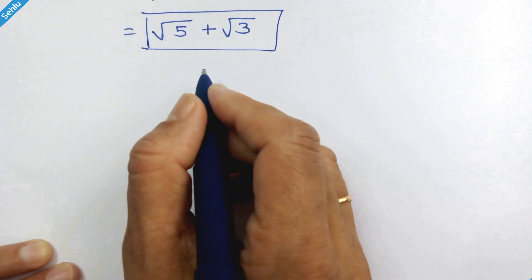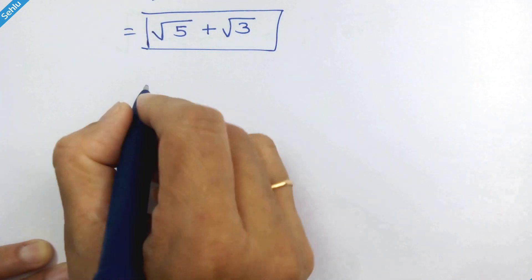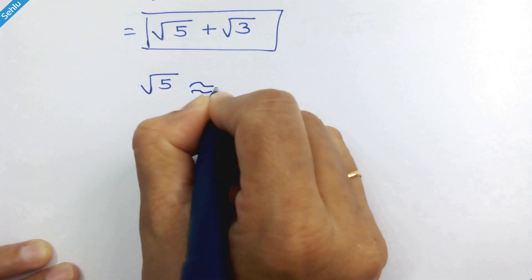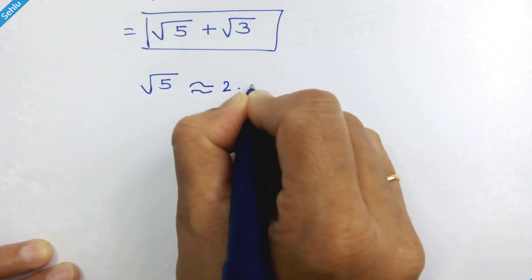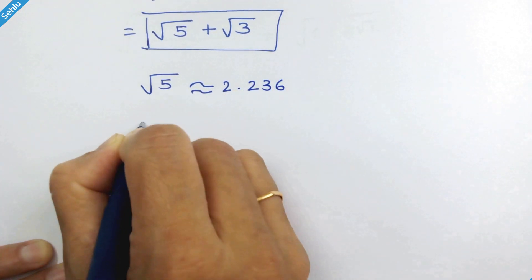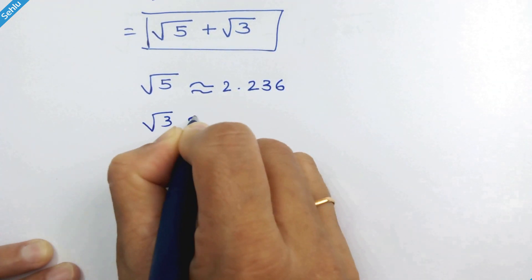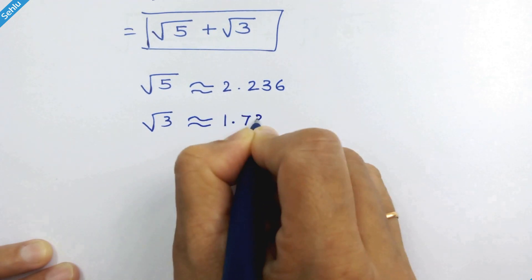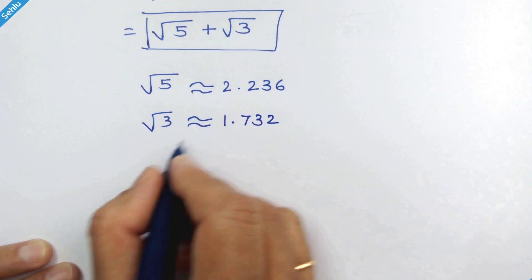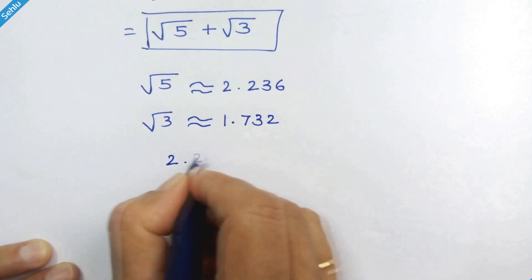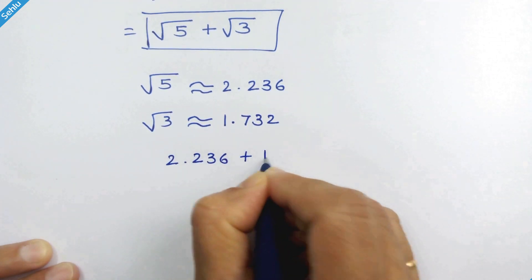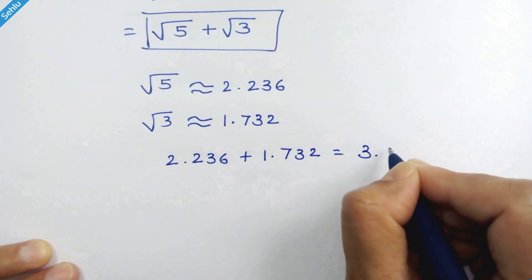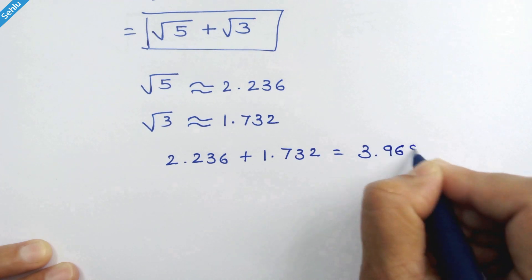Now let's find the decimal value. Square root of 5 is approximately 2.236 and square root of 3 is approximately 1.732. Adding these gives approximately 3.968.